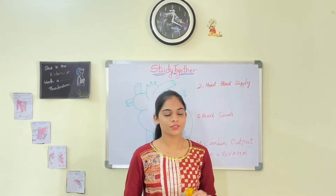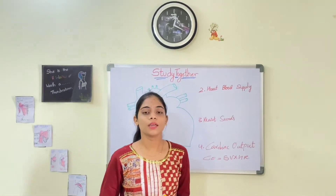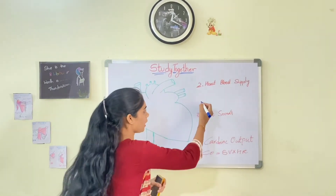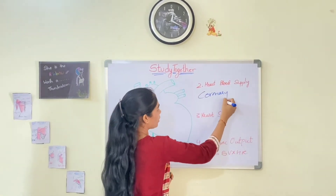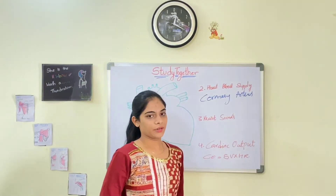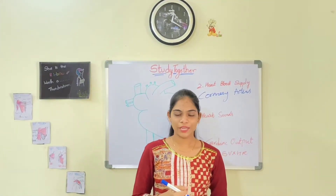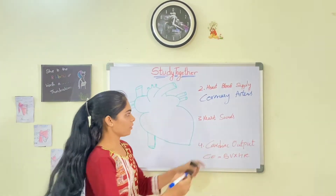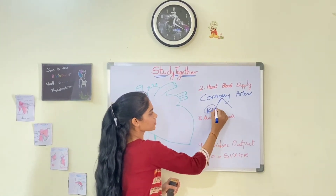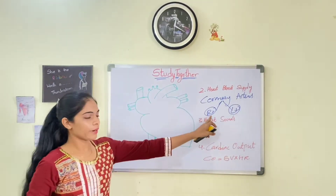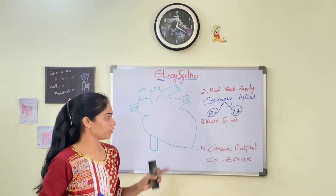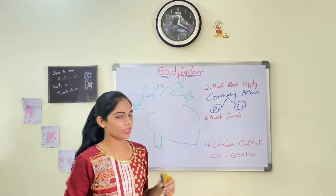Now let us discuss our second topic — your heart's blood supply. Like other organs, the heart also has a blood supply through coronary arteries, which are branches of your aorta. You have not four but two branches of coronary arteries — a right branch and a left branch. The right branch supplies the right side of your heart and the left branch supplies the left side of your heart.